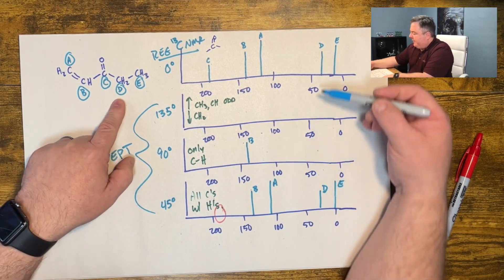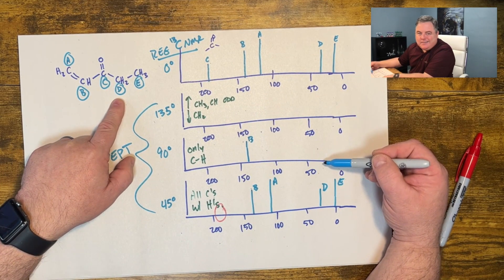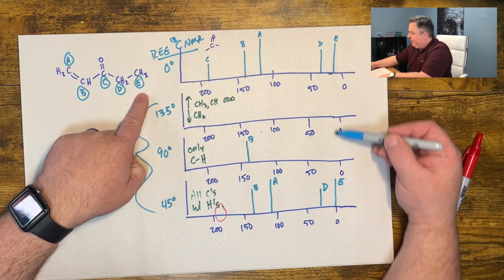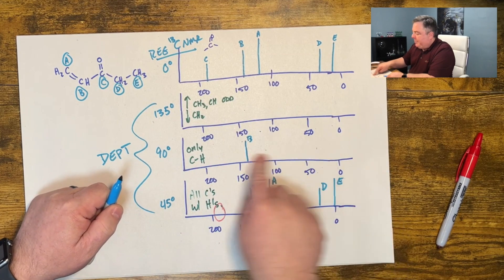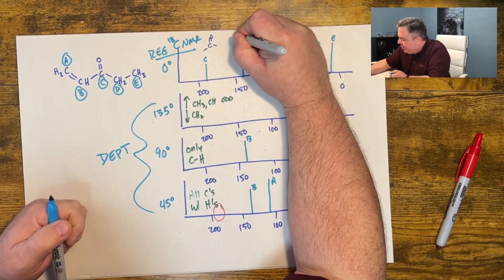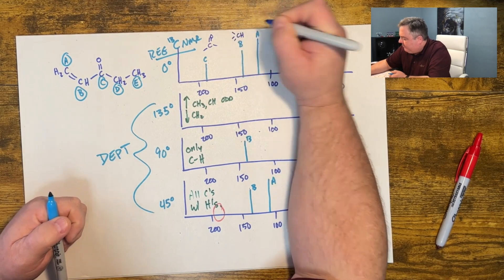C no hydrogens on it, it's not a CH, it does not show up. D CH2, that's not a CH, there's too many hydrogens on it, it does not show up. E CH3, it won't show up. So B is the only peak I see in this one. I know that B has one hydrogen on it and it's a double bond in my double bond region.